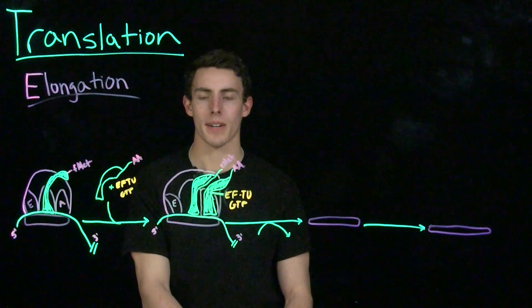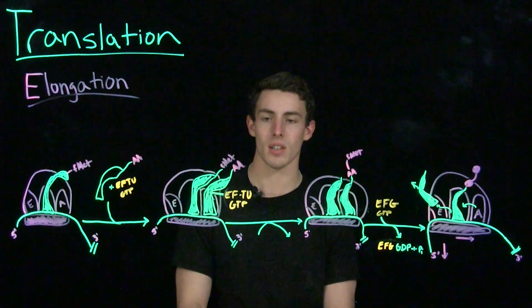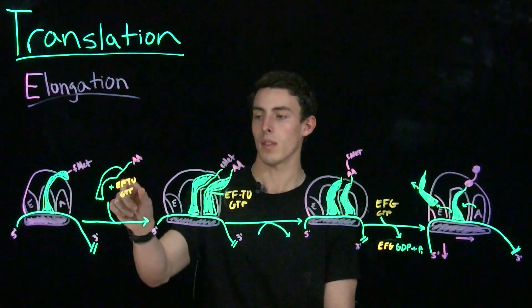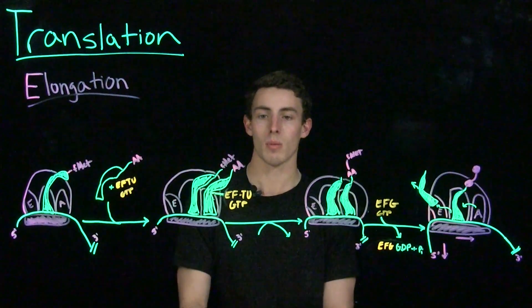In eukaryotic and prokaryotic cells, elongation is going to be roughly the same. At the start of elongation, a charged tRNA is going to bind to EFTU or elongation factor TU that is primed with GTP. Remember that GTP is the energy source of translation.